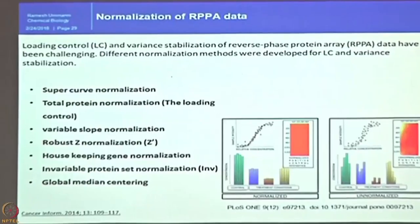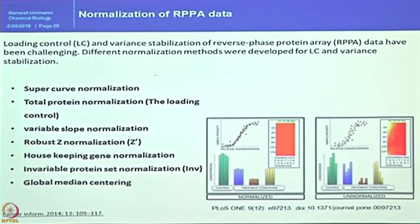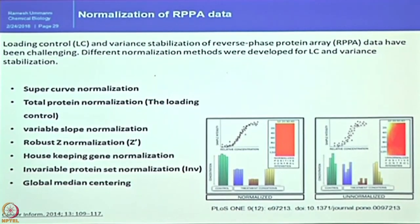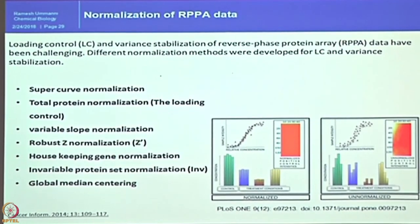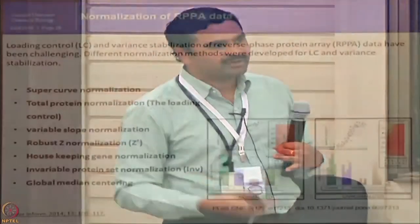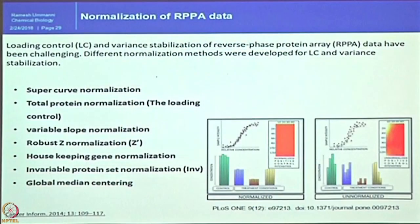When you have such a high-end dataset, you need to worry about how correct the experiment is. One sensitive point touched upon earlier is to follow normalization methods, and particularly in RPPA, data normalization is very very difficult. Because when you do protein estimation and extraction, these steps cannot be replicated for 1000 samples in the same manner. To avoid that, different normalization methods have been developed: loading control and variance stabilization have been challenging. Different normalization methods developed include super curve normalization, total protein normalization, variable slope normalization, and robust Z-score normalization.